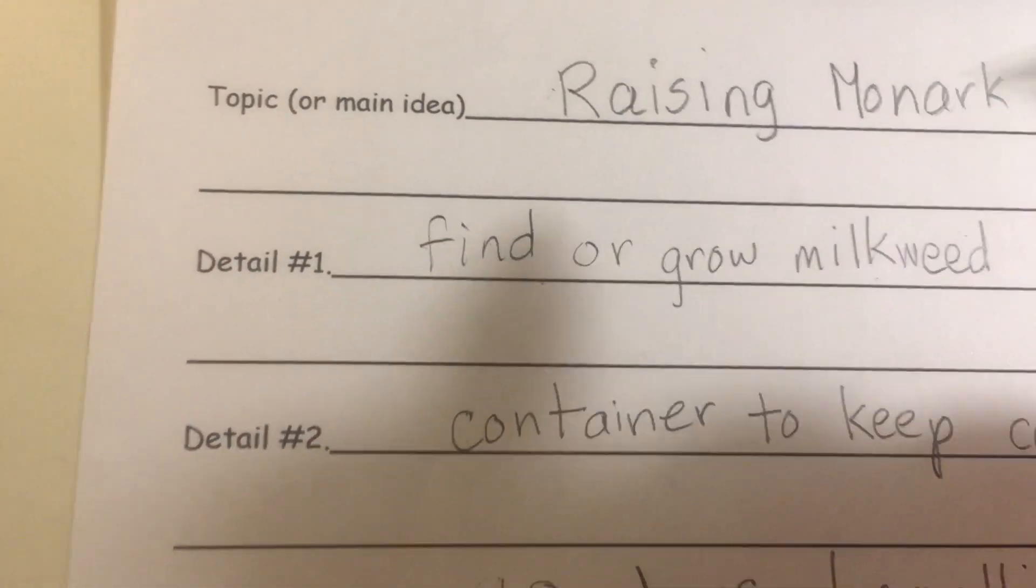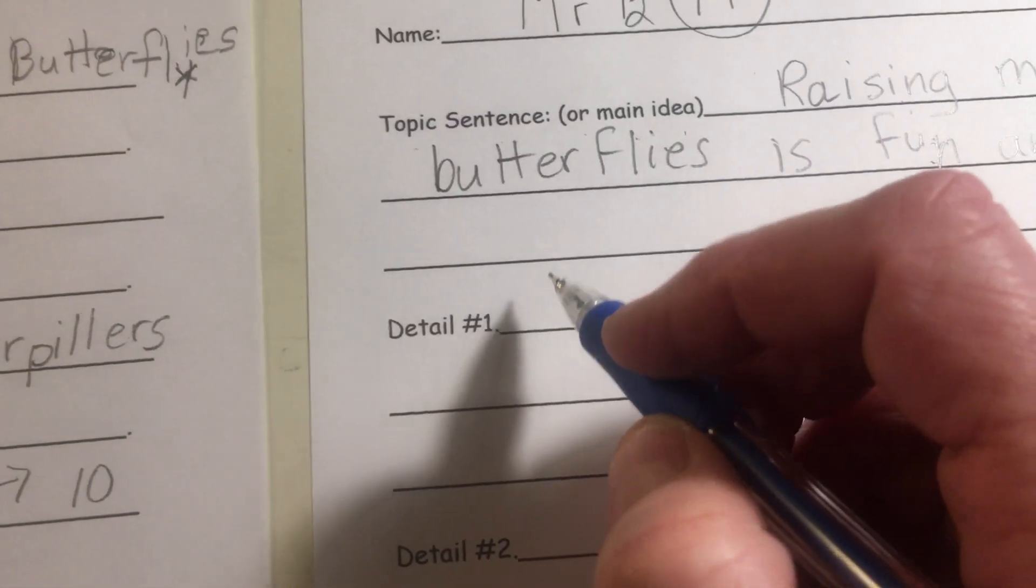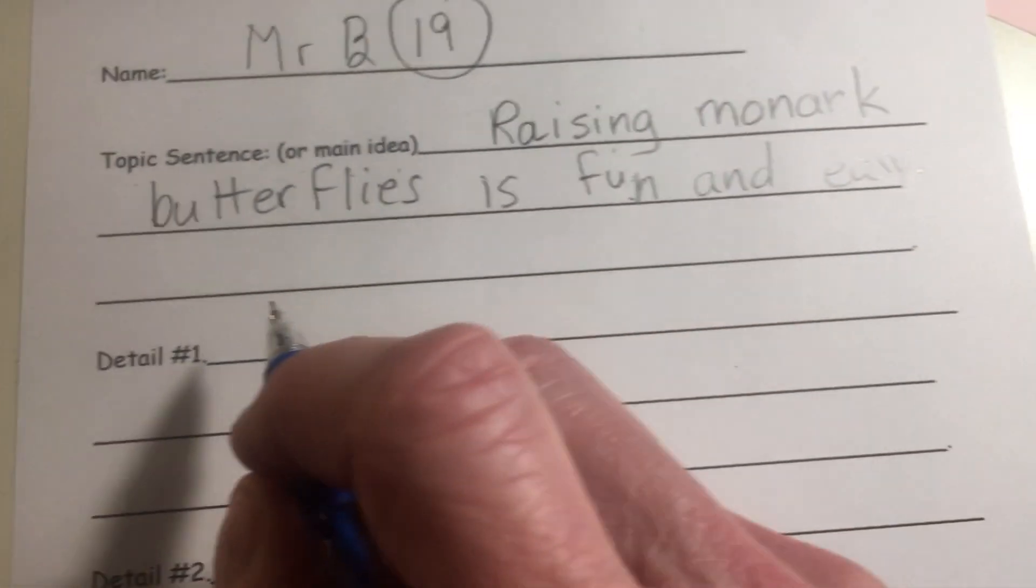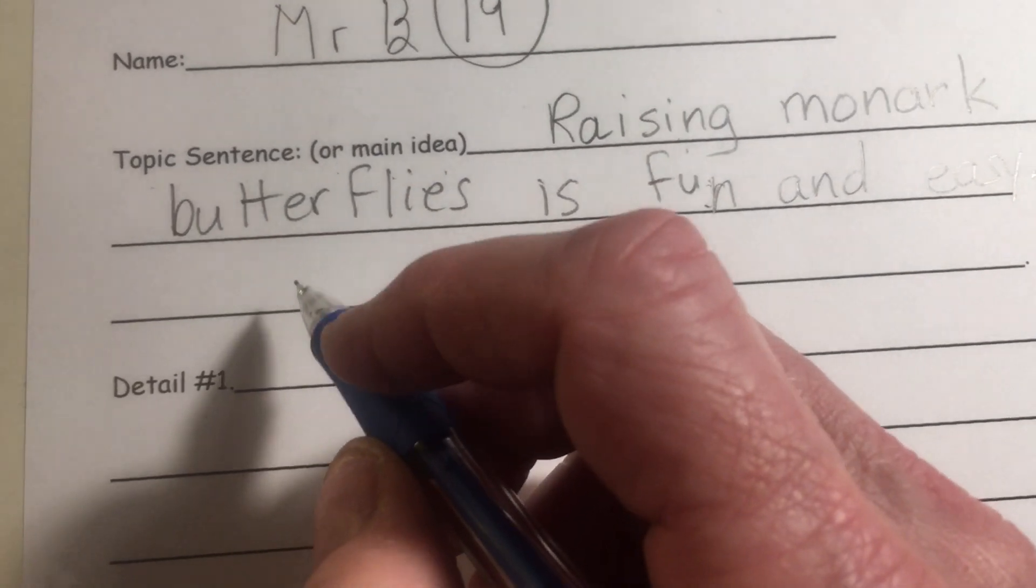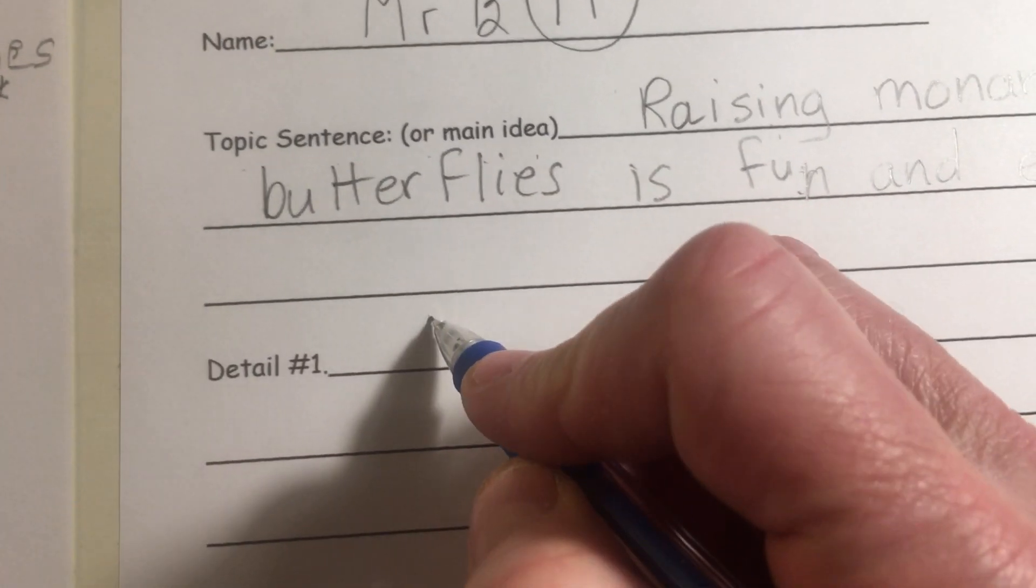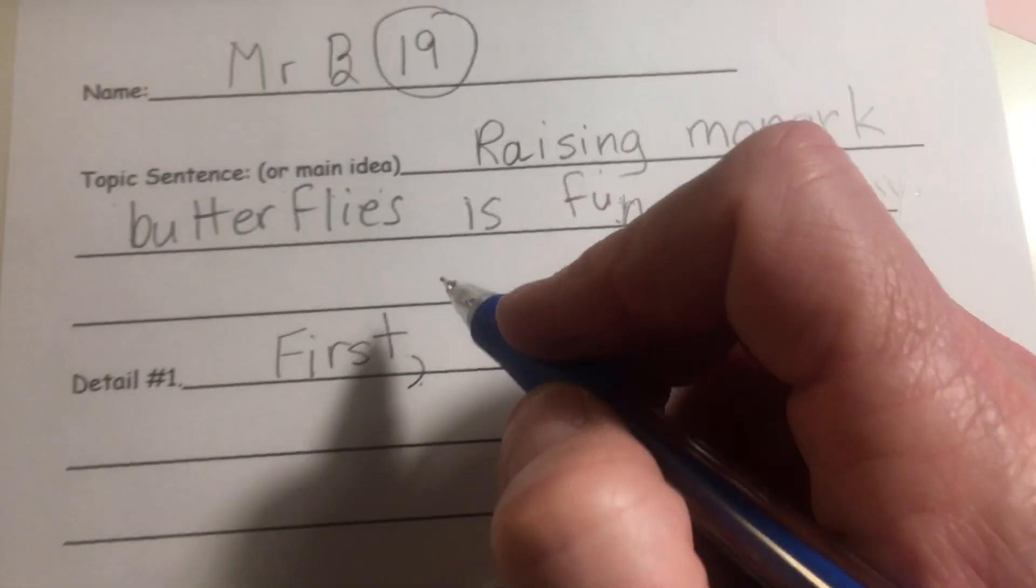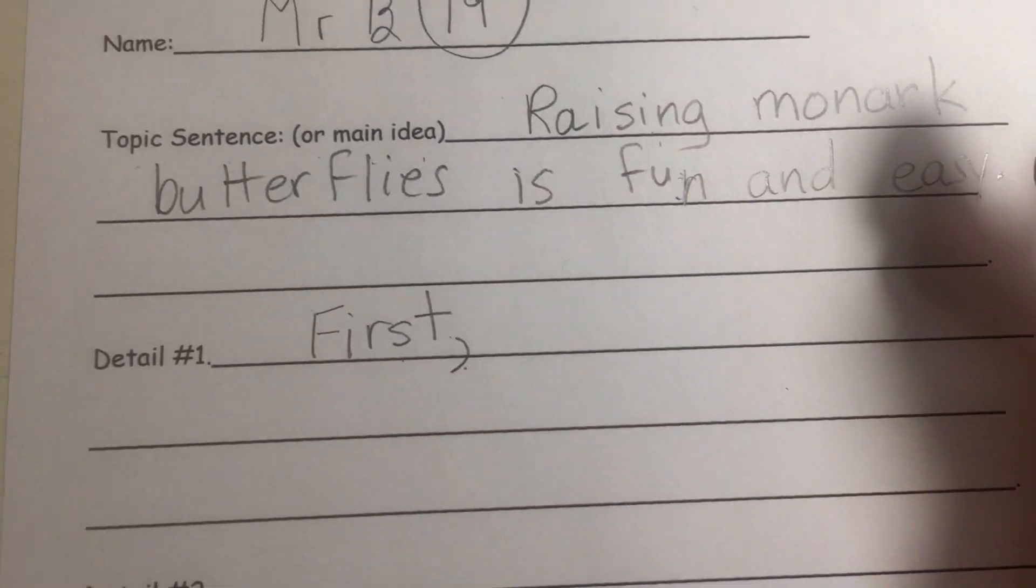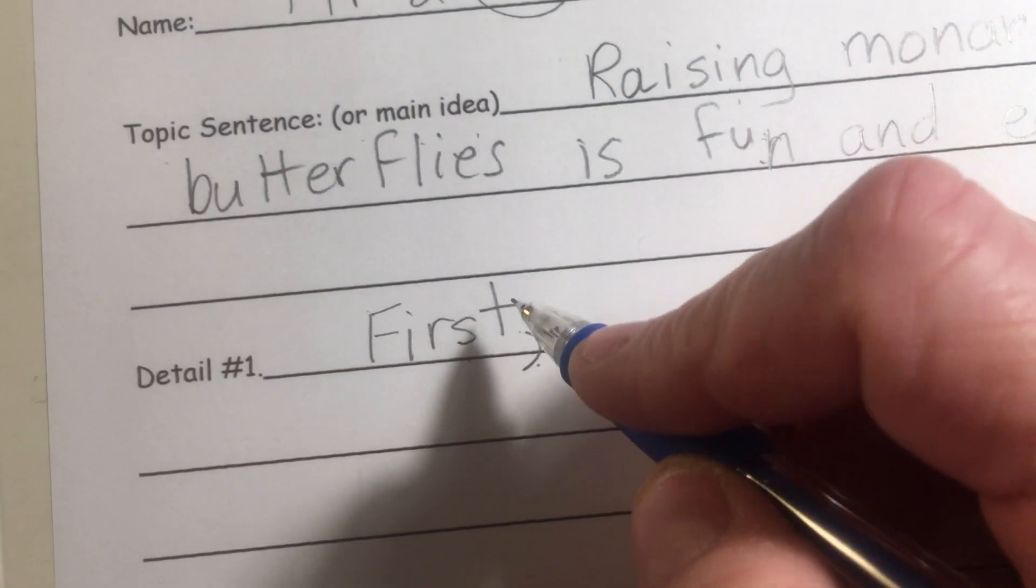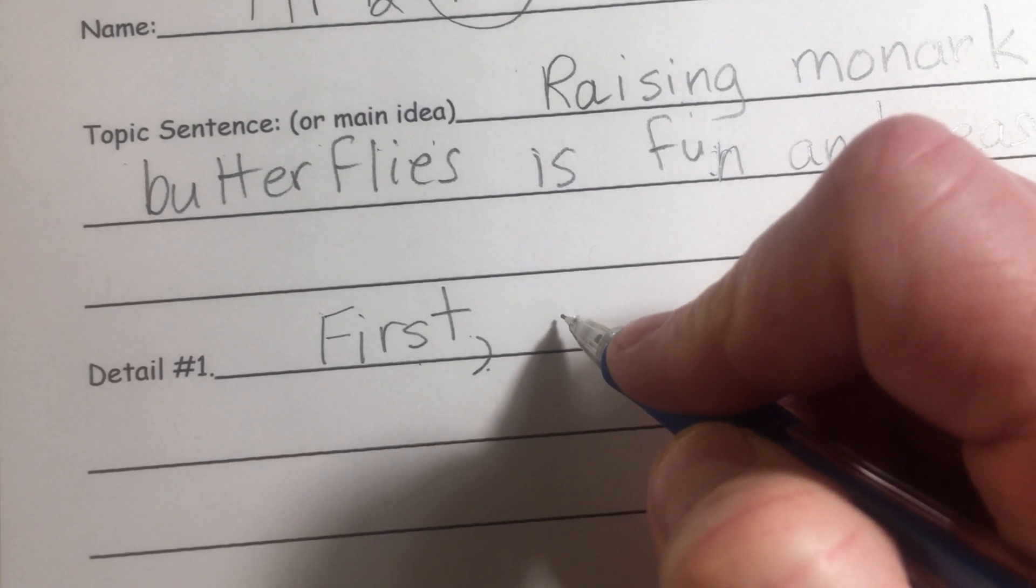Now my first detail is that you have to find or grow milkweed. So finding, growing milkweed is an important step, right? So I'm going to say, well, I could say 'first' because it's kind of like the first step. And remember, if you do use the word 'first' you have to have a comma after it. But you don't have to use 'first' in yours. It depends on if you're telling things in an order like you're telling the steps. But it depends on what your detail is. For me, I'm going to say first.